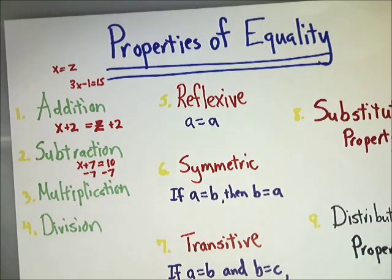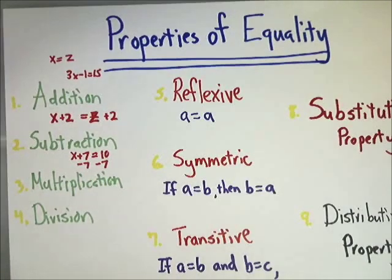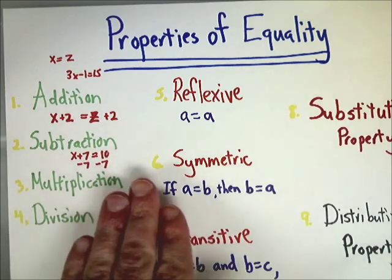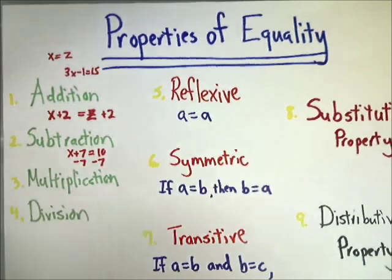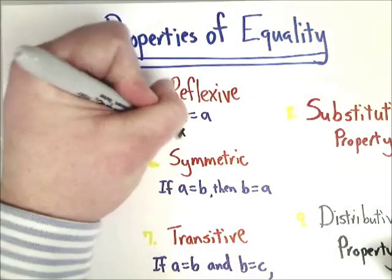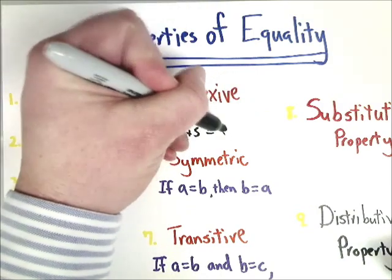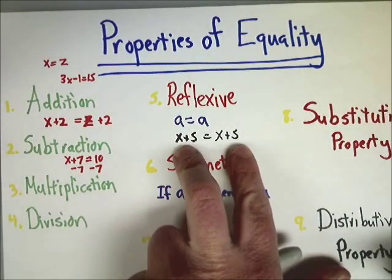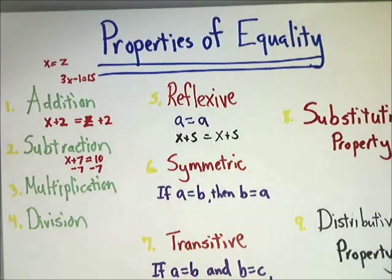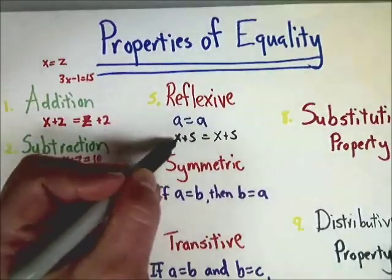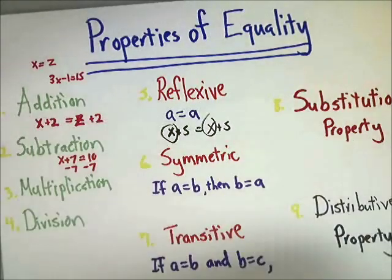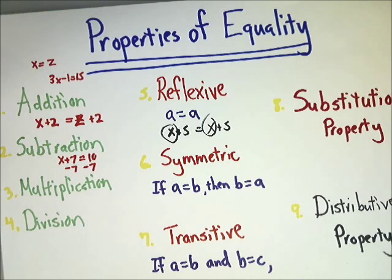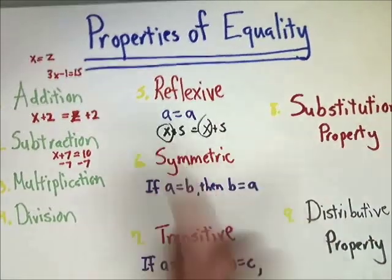Three slightly odd but simple properties are reflexive, symmetric, and transitive. The reflexive property says that if something is on one side of the equation and also on the other, they're equal. So X equals X. The idea is that this X and that X are the same - your personal agreement that you're not going to make X worth 7 here and suddenly 2 over there.